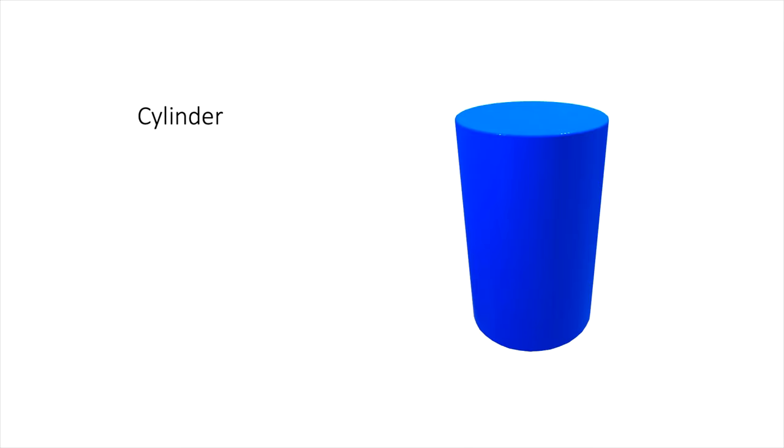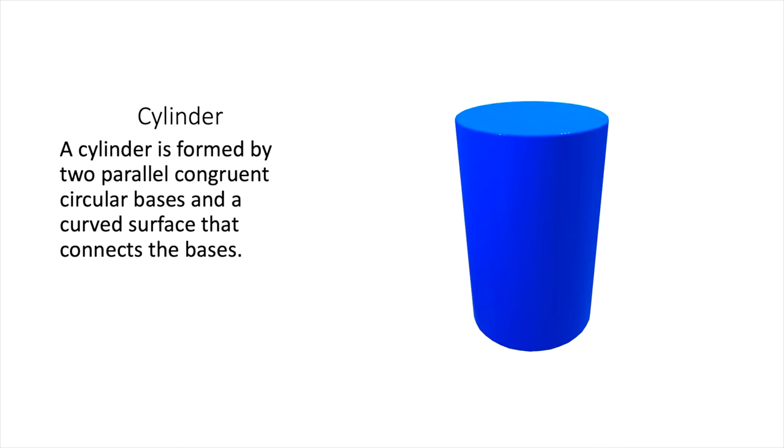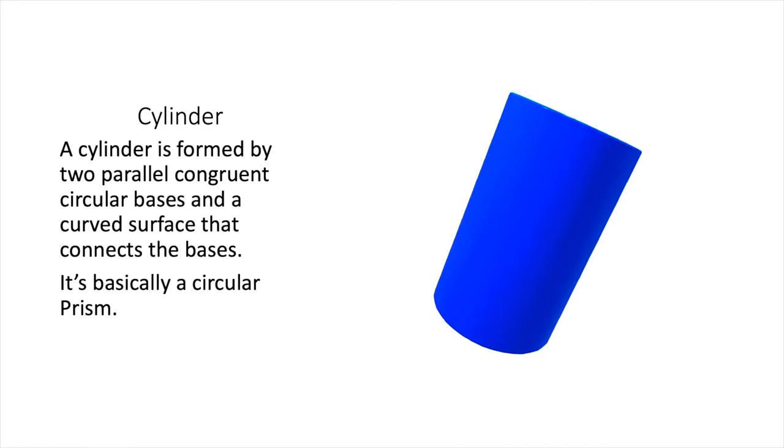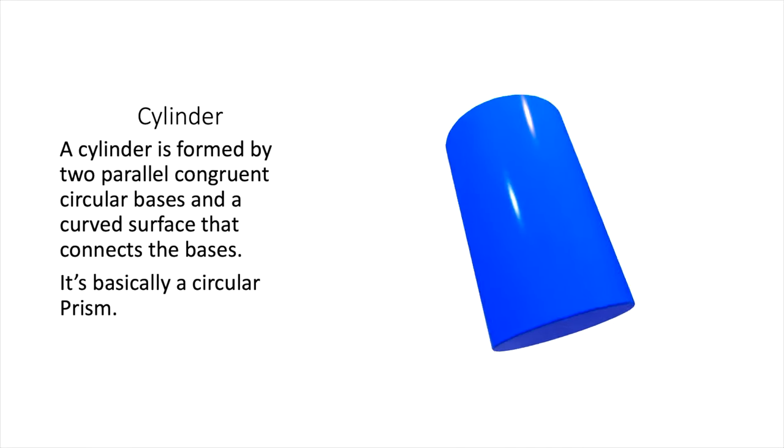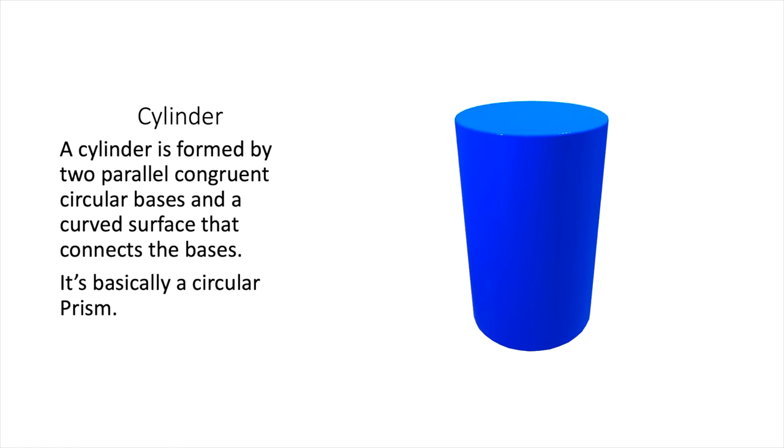So this is a cylinder right here, and a cylinder is formed by two parallel congruent circular bases and a curved surface that connects the base. So if you look at this, it's basically we have a circle on top, circle on bottom, and just this straight line. So it's basically a circular prism right there. All the formulas, everything else is going to work just like a prism, just with circles instead.